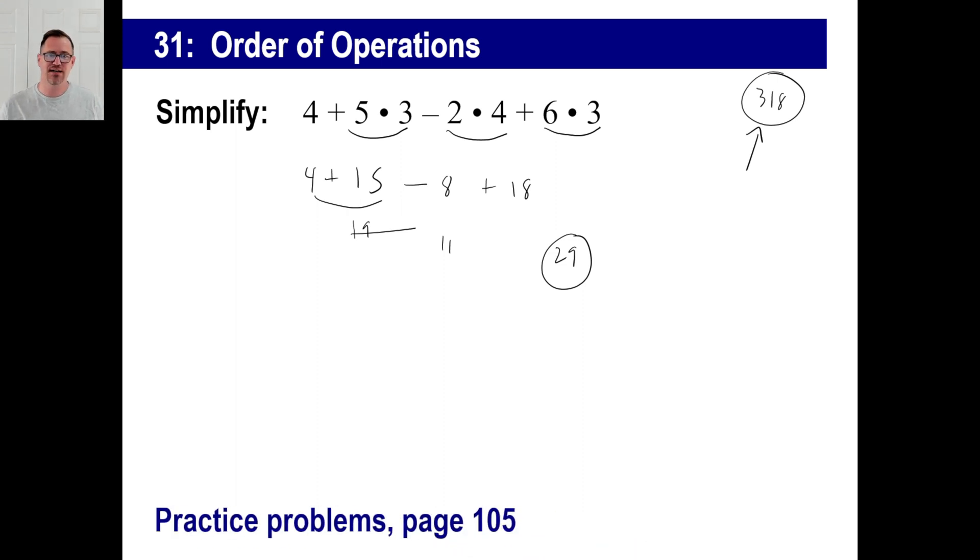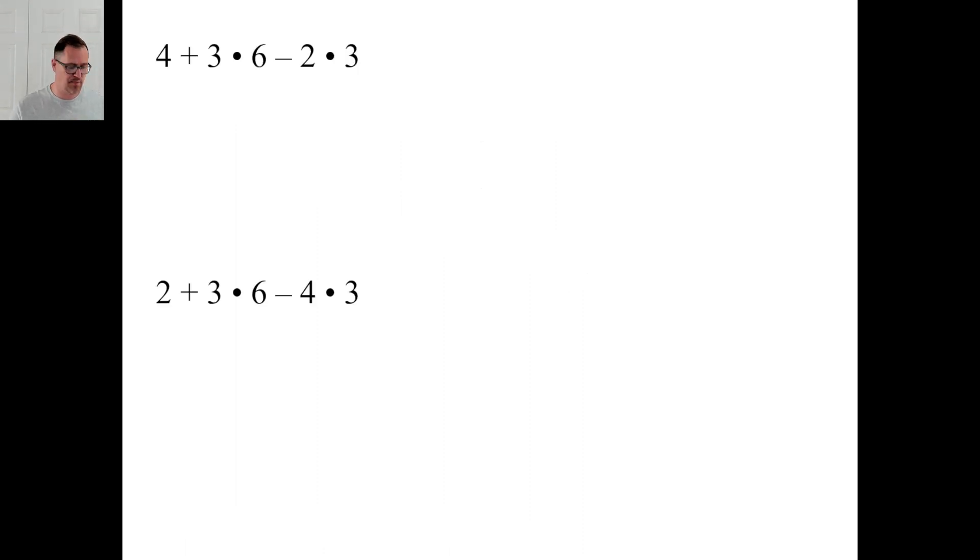Look on page 105. Try those and pause it and come back. Well, the first one, of course, we're going to do multiplication first. So we got through this one and we got this one. So we have 4 + 3 × 6 is 18 - 6. 4 + 18.